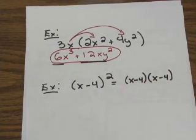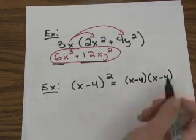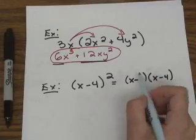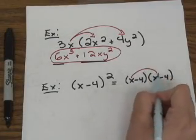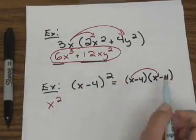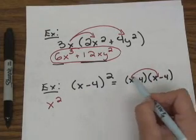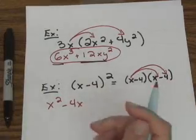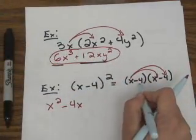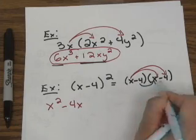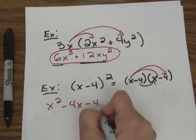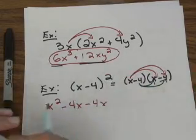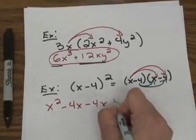When you FOIL this, you will get a trinomial as an answer. First, multiply x times x to get x squared. Next, multiply x times negative 4 to get negative 4x. Thirdly, take negative 4 and multiply it by x to get negative 4x. And finally, take negative 4 times negative 4 to get positive 16.